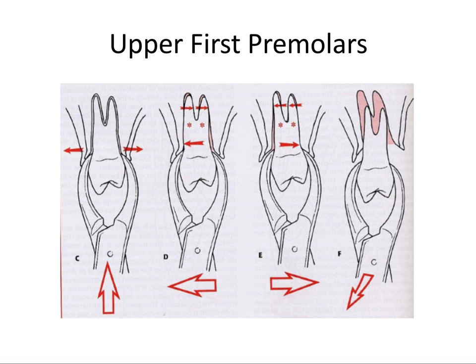Lower molars are the exact opposite — among the hardest teeth to extract, since the roots are often divergent and the bone is densest in the posterior mandible. We apply buccal pressure first and then lingual pressure, with no rotational pressure because of the multiple roots. You have to be very slow and steady, focusing on apical pressure and apical seating of the forceps, using something like a cow horn forceps to engage the bifurcation area.